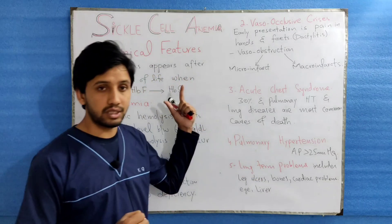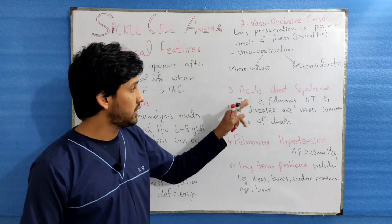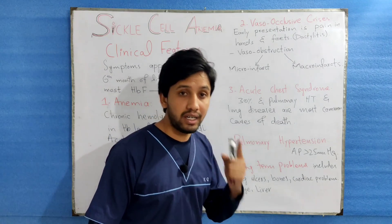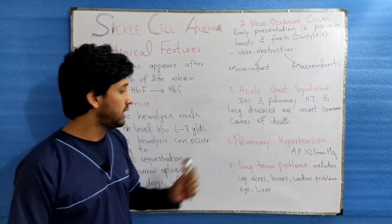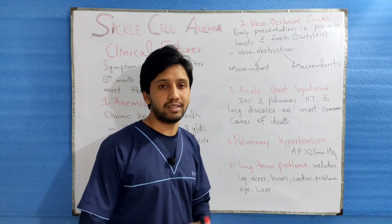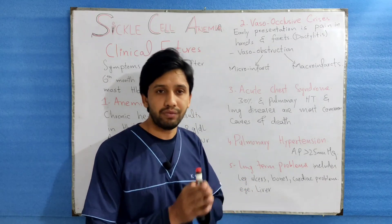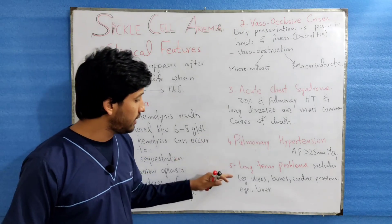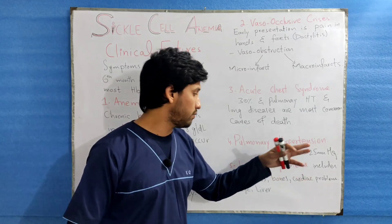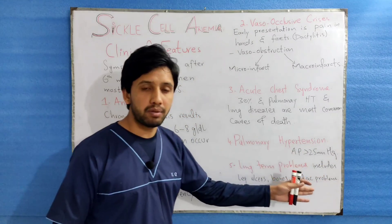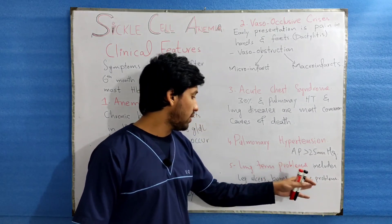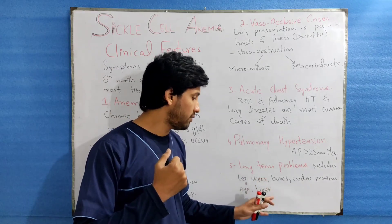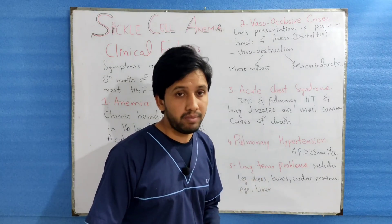Acute chest syndrome presents with chest pain, hypoxia, and consolidation on X-ray. The fourth feature is pulmonary hypertension, defined as pulmonary artery pressure greater than 25 mmHg, occurring in 10% of patients. Long-term problems include leg ulcers, bone and cardiac problems involving cardiomegaly, retinal infarction causing background retinopathy, liver involvement, and growth and developmental problems.